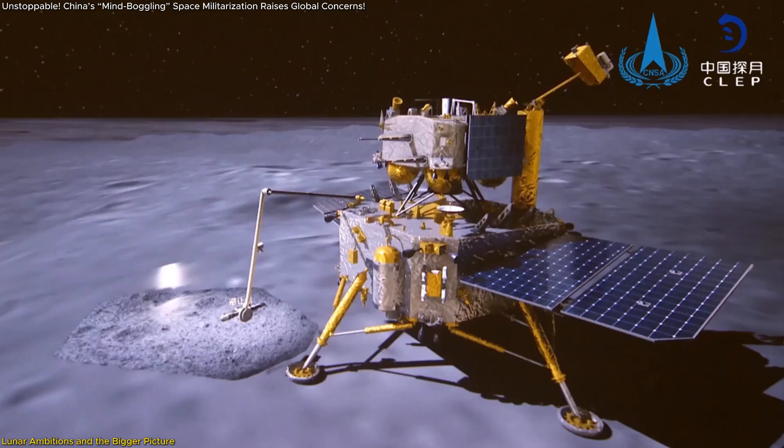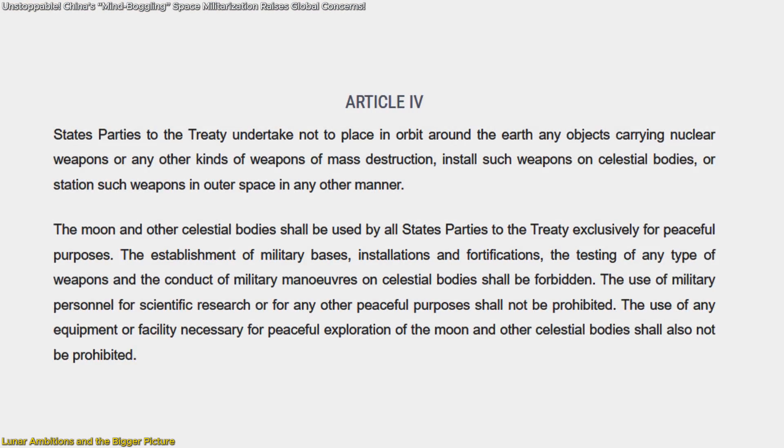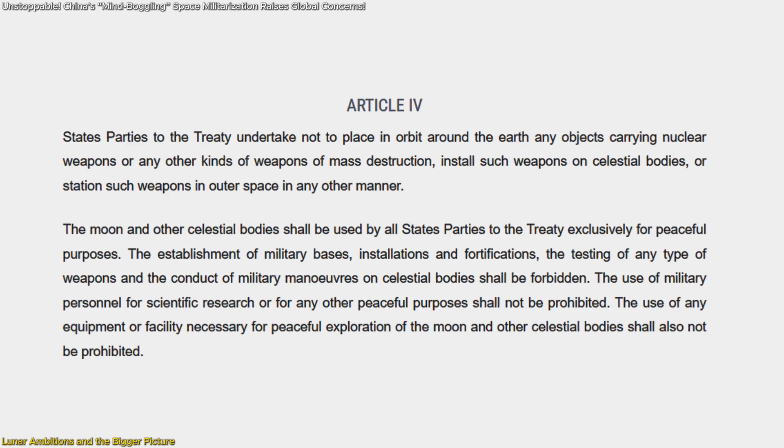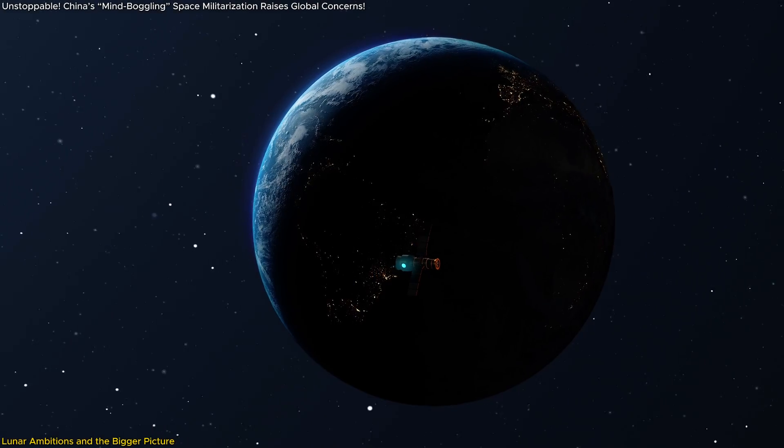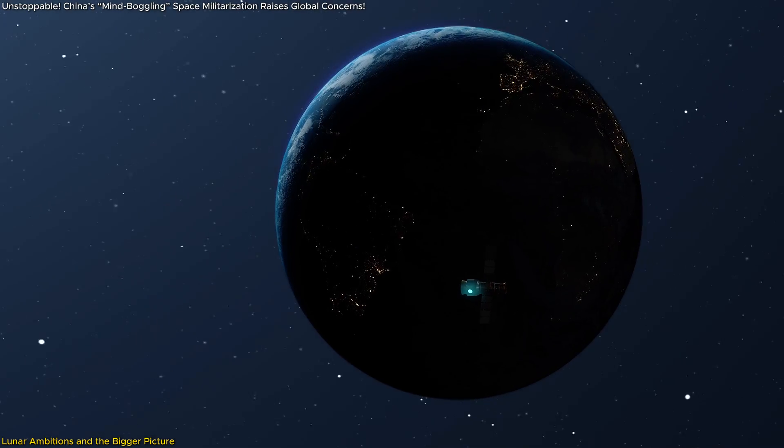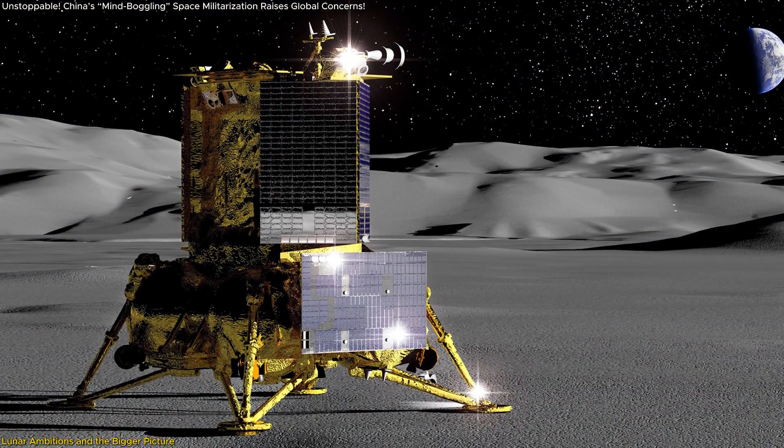NASA Administrator Bill Nelson has expressed concerns that China's lunar ambitions could conflict with the principles of the Outer Space Treaty. The treaty explicitly states that celestial bodies, including the Moon, must be used for peaceful purposes. Yet China's track record of militarizing dual-use technologies raises questions about how they might exploit lunar resources for military gain.